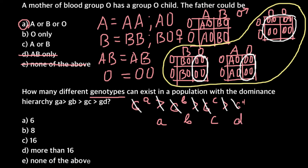Now imagine we have two homologous chromosomes. We have a locus on one chromosome and the same locus on the other homologous chromosome, and in this locus we may have different alleles. For example, on one chromosome we may have allele A and on the second chromosome we may have allele B, or another combination could be AA, BB, or CA. There are many combinations.